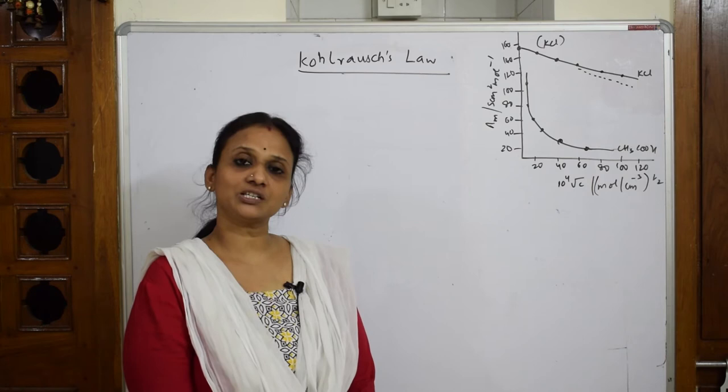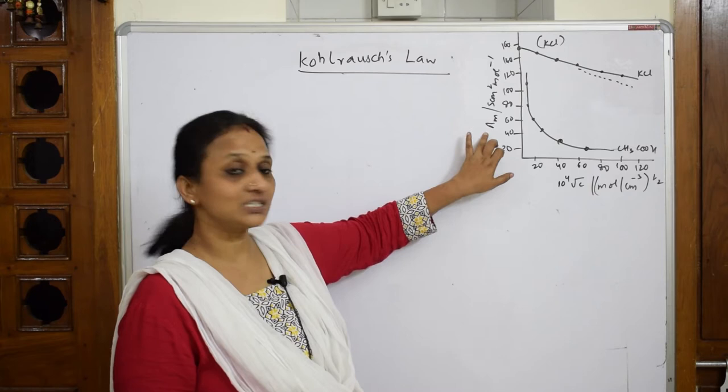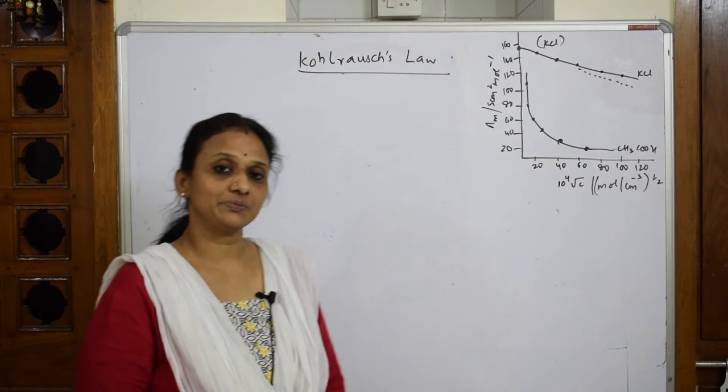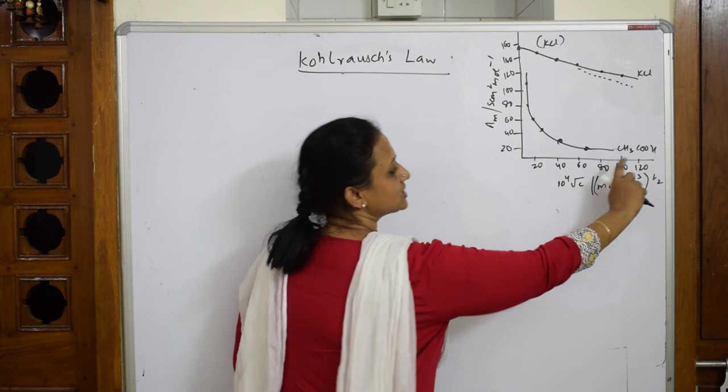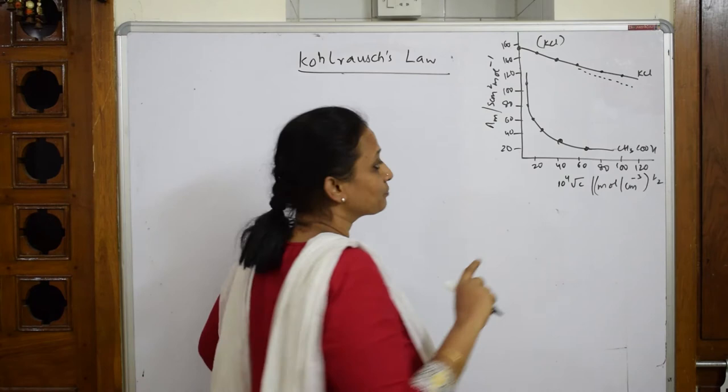Here I have drawn a graph where on the x-axis we are plotting the concentration and on the y-axis we are plotting the molar conductivity. Now, the concentration is increasing towards the right-hand side, and the molar conductivity from zero is going on increasing.